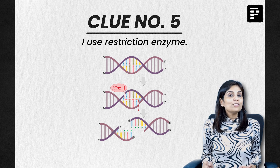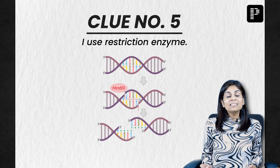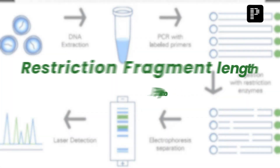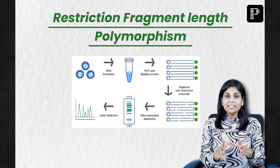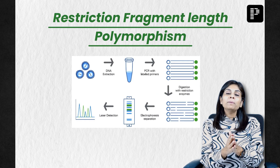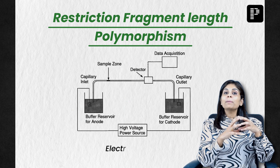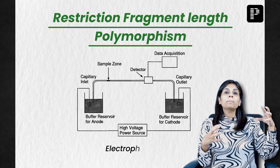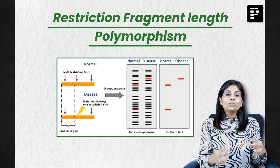So which technique uses restriction enzyme to identify a person and to identify a disease caused by a known mutation? It is restriction fragment length polymorphism, which uses restriction enzyme that cuts at a specific site. Depending upon whether it is cut or uncut, which you will be able to identify by electrophoresis, you will be able to find out whether the person has got a normal allele or a diseased allele.